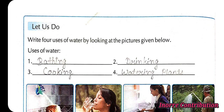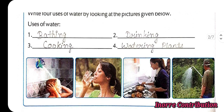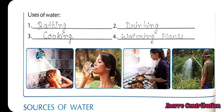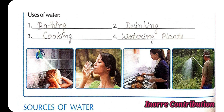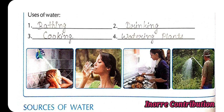Another exercise: Write four uses of water by looking at the pictures given below. Uses of water — first one: a child is bathing. Second: a lady is drinking. Third: a lady is cooking. In the last one, a man is watering plants.